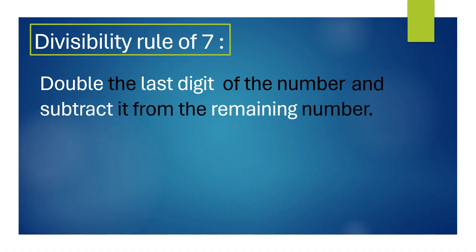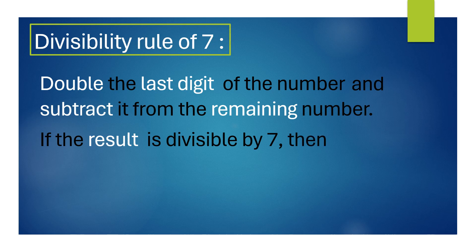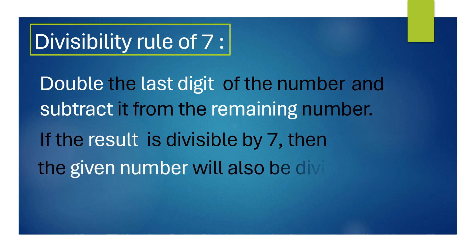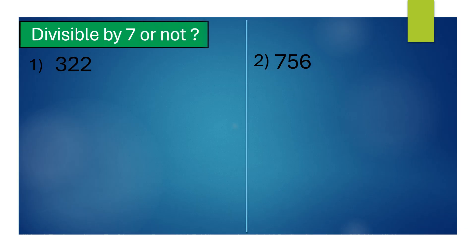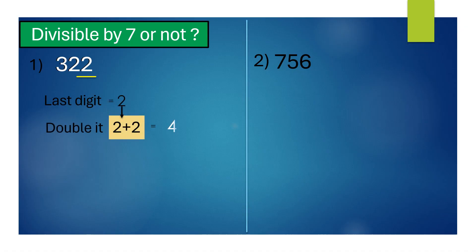If the result is divisible by 7, then the given number will also be divisible by 7. Let's check whether these numbers are divisible by 7 or not. For 322, the last digit is 2. Double it — we get 4.